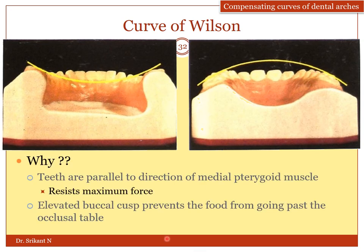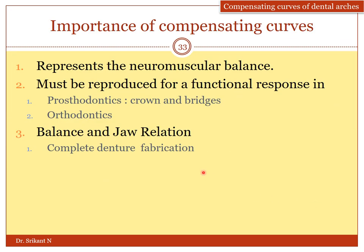The teeth are aligned parallel to the direction of the medial pterygoid muscle, which is attached at the angle of the mandible. The teeth in this alignment resist maximum forces and dissipate them to the center of the skull or to the temporomandibular joint. The elevated buccal cusps prevent food from going past the occlusal table, preventing food lodgment. Compensatory curves are important because they represent the neuromuscular balance. They are skewed in cases of muscle dysfunction, cleft lip and palate, etc. Compensatory curves must be reproduced for functional homeostasis in orthodontic therapy, crowns and bridges, complete dentures, etc.